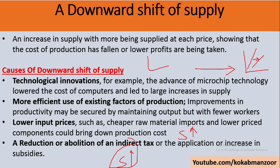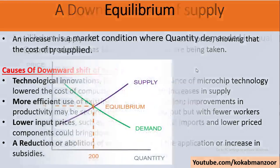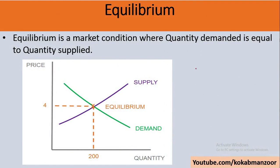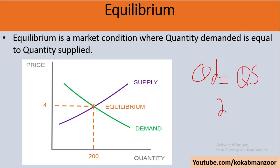Finally, demand-supply equilibrium: the demand curve and the supply curve intersect at a point called equilibrium. When quantity demanded equals quantity supplied, that is equilibrium. In this example, quantity demanded and quantity supplied are both 200 units, and the equilibrium price is $4 per unit.